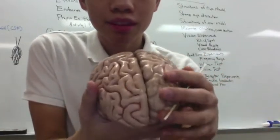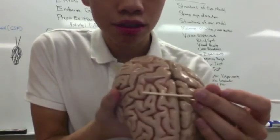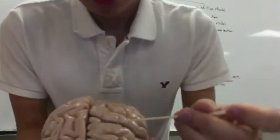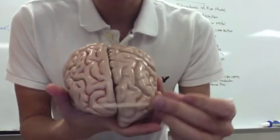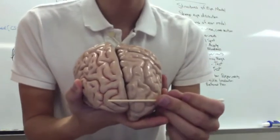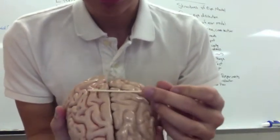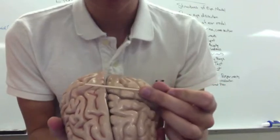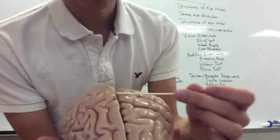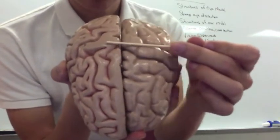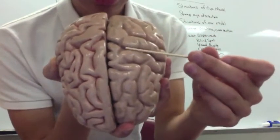Next is your central sulcus, which goes across right here. You have the precentral gyrus on your frontal lobe side — that's your motor section. Then you have your postcentral gyrus, which is behind the central sulcus and deals with sensory function.